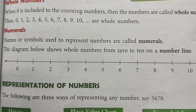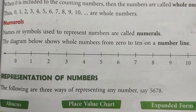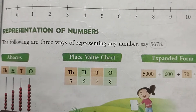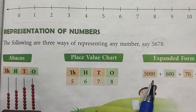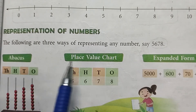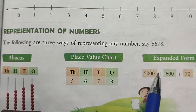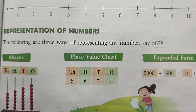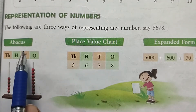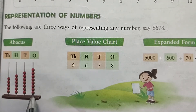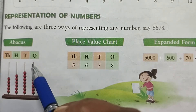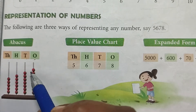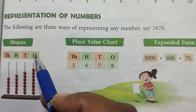Next heading is representation of numbers. Numbers کو different ways میں represent کر سکتے ہیں: first is abacus, second is place value chart, and third is expanded form. In abacus, numbers are shown with the help of beads on the particular string for ones, tens, hundreds, and thousands.